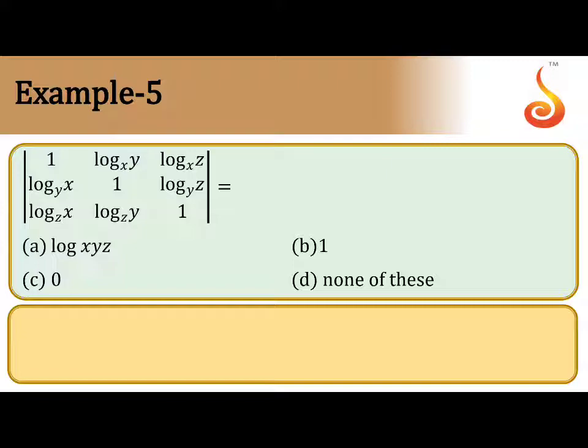So normally solving this is very difficult. Use the identities of logarithms, properties of logarithm. Log_a(a) is 1, and log_b(a) can be written as log a divided by log b. So use these two identities to get the simplest form, and you can easily solve the value of the determinant.